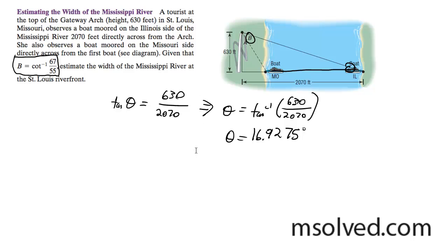Since I have that, I know that down here this is 90 degrees, and this right here is going to be 90 minus 16.92, which gives me 73.0724 degrees.